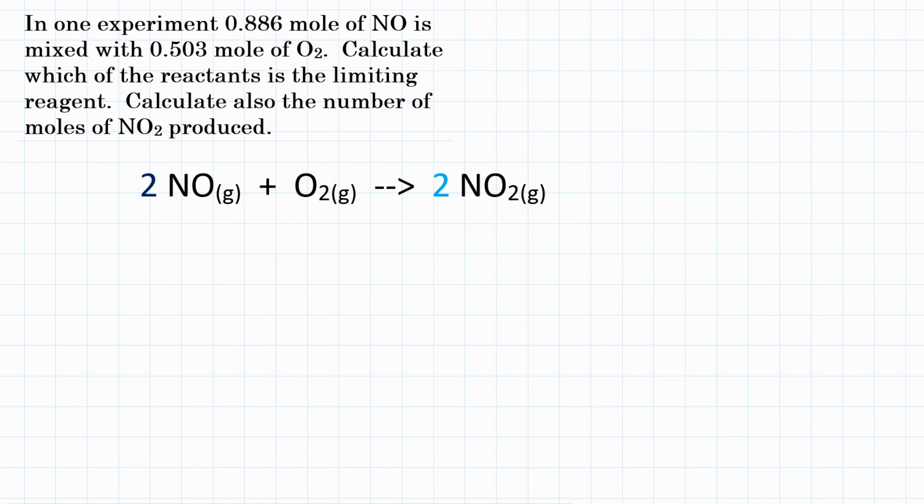Alright everybody. In one experiment, 0.886 moles of NO is mixed with 0.503 moles of O2. Calculate which of the reactants is the limiting reagent, and then calculate also the number of moles of NO2 that's produced.